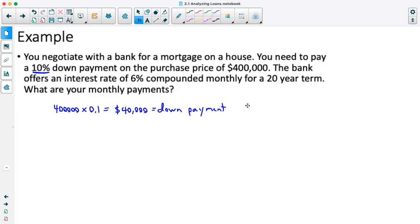So we are essentially borrowing $400,000 minus a down payment of $40,000. So we're borrowing $360,000. So what we would probably do in this case, because our mortgage has regular monthly payments, is put our information into a TVM solver.